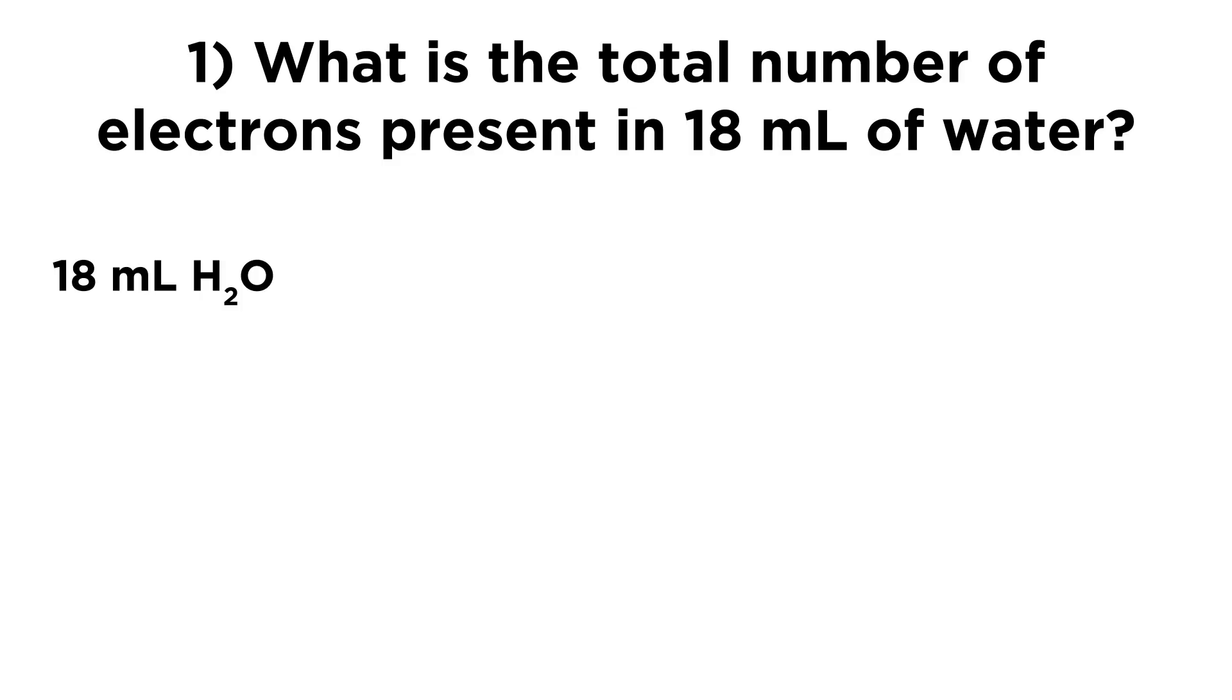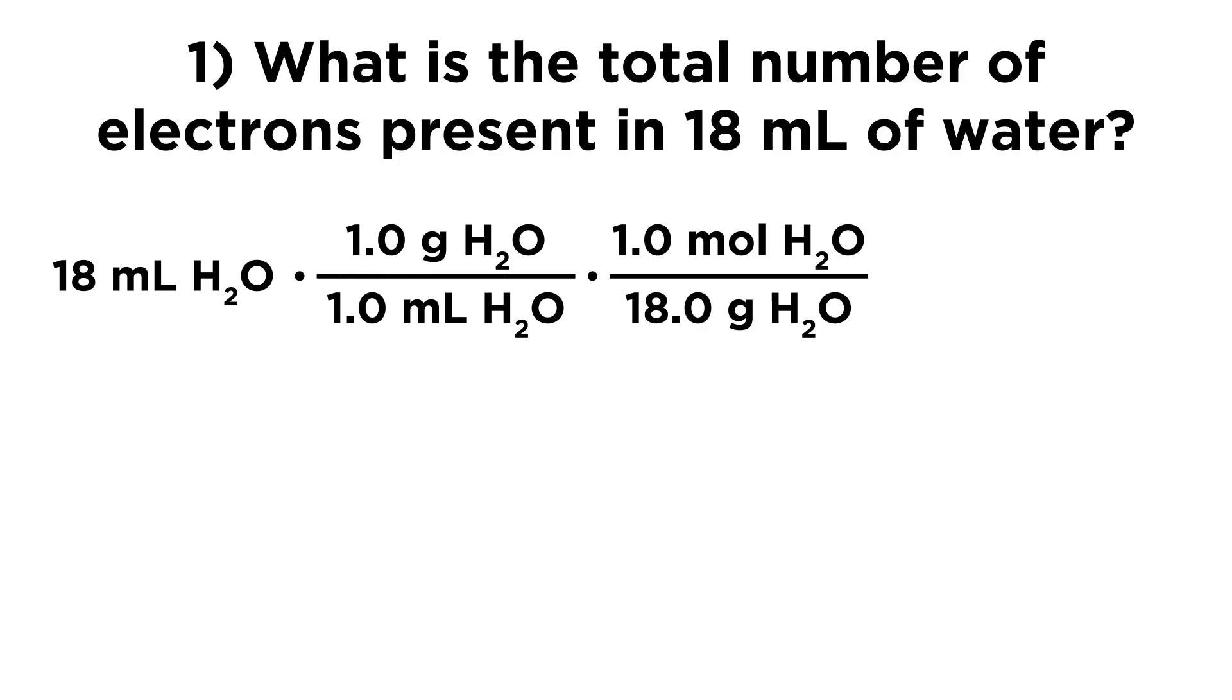And so the first thing we want to do is we want to convert this into a mass because from mass we can get to moles and that's more useful information. So let's go ahead and multiply this by one gram of water over one milliliter of water because we know that water is one gram per milliliter. And so that will essentially convert this into 18 grams of water.